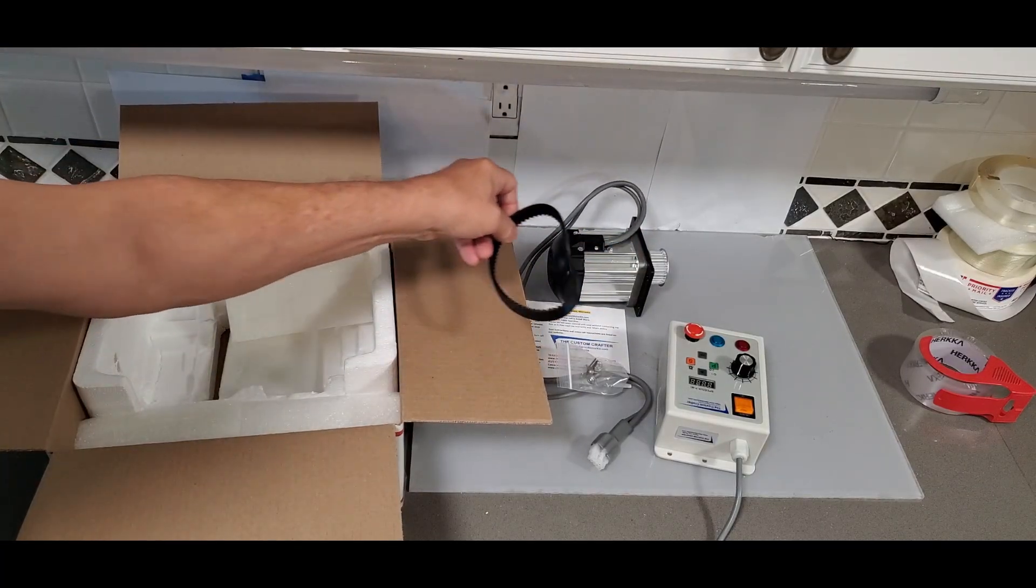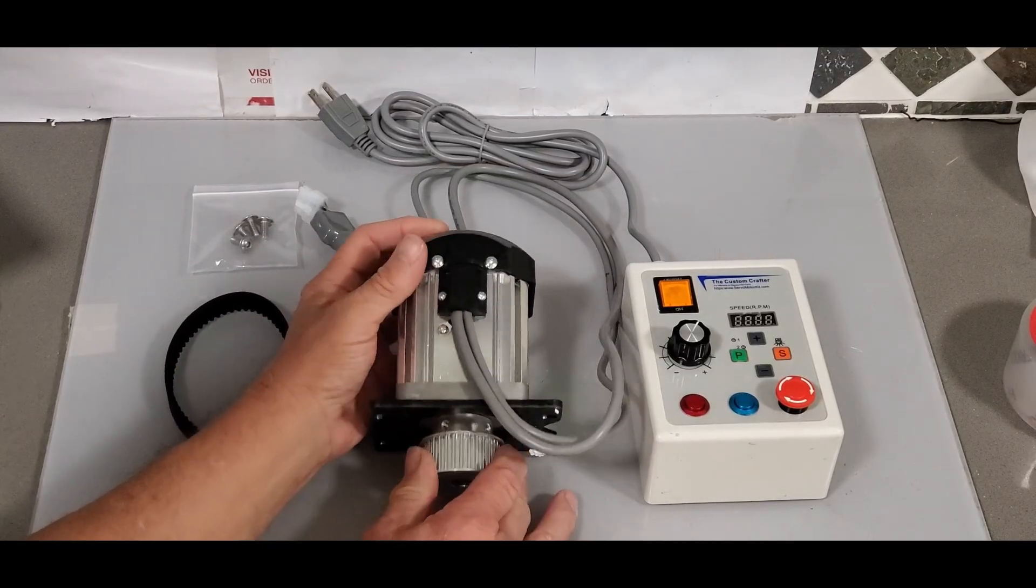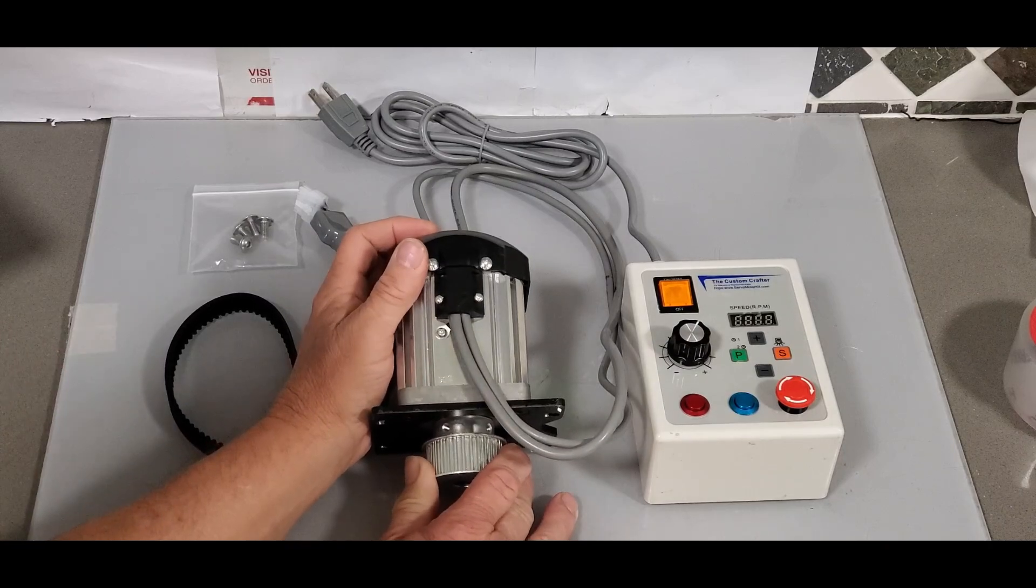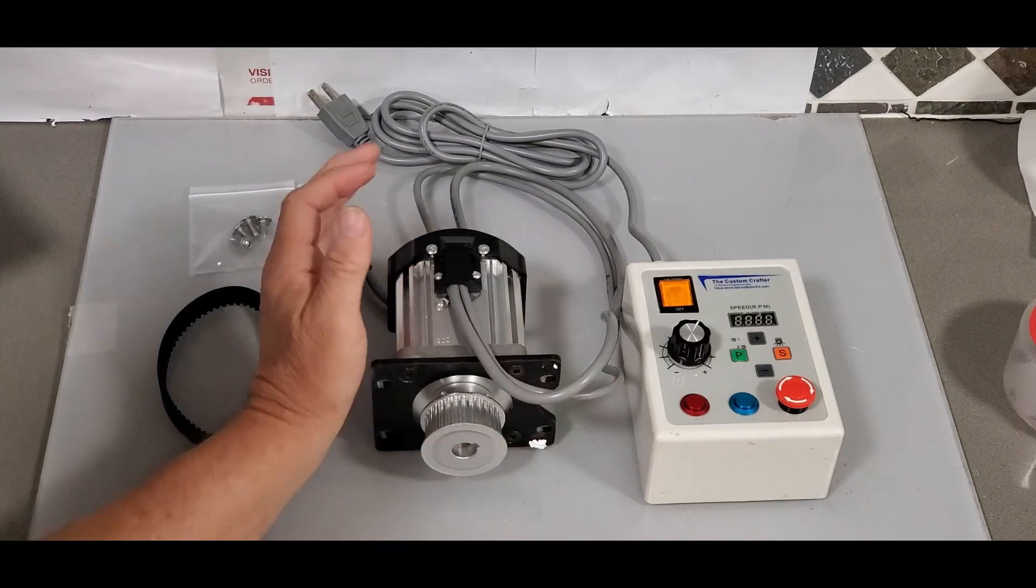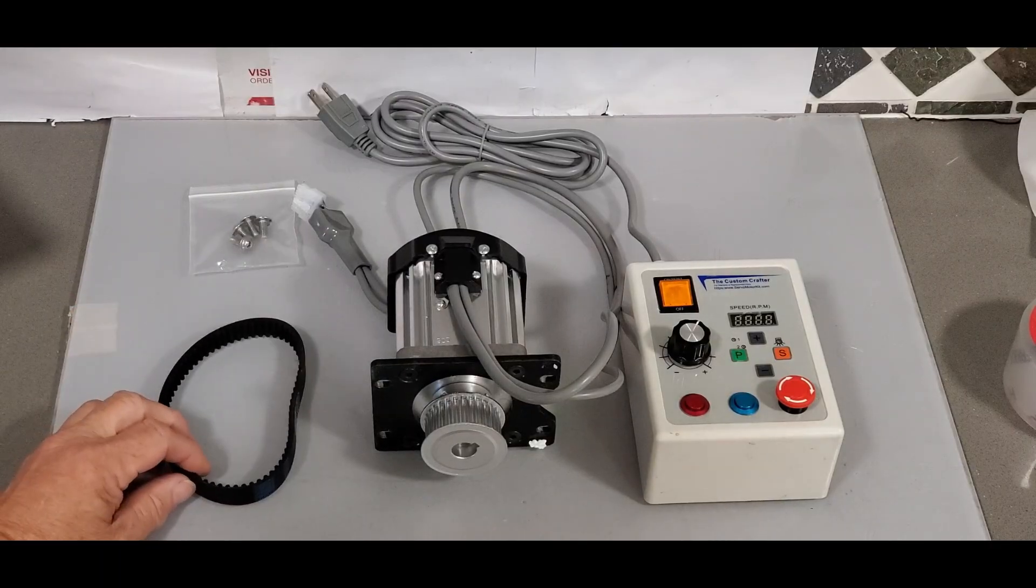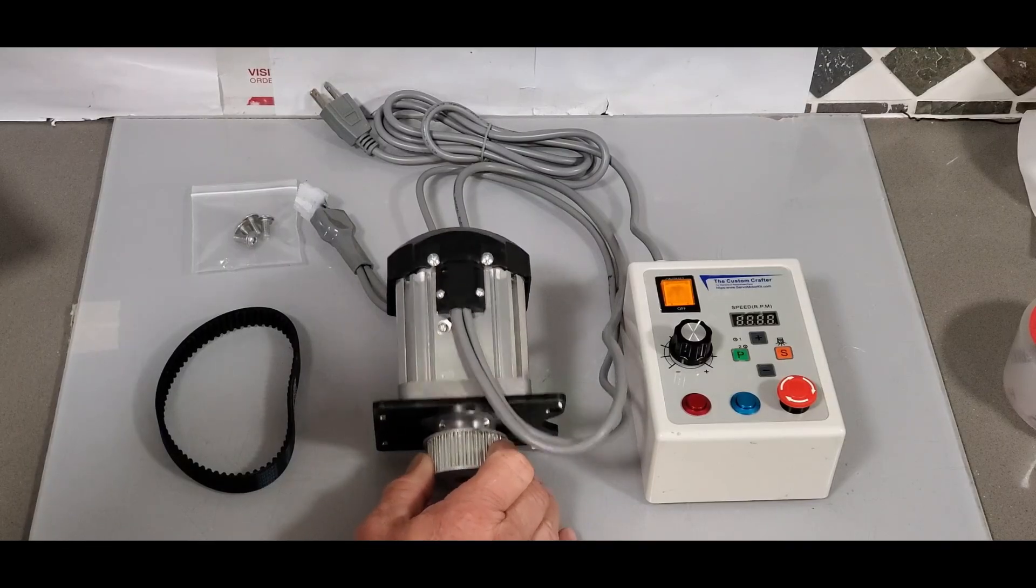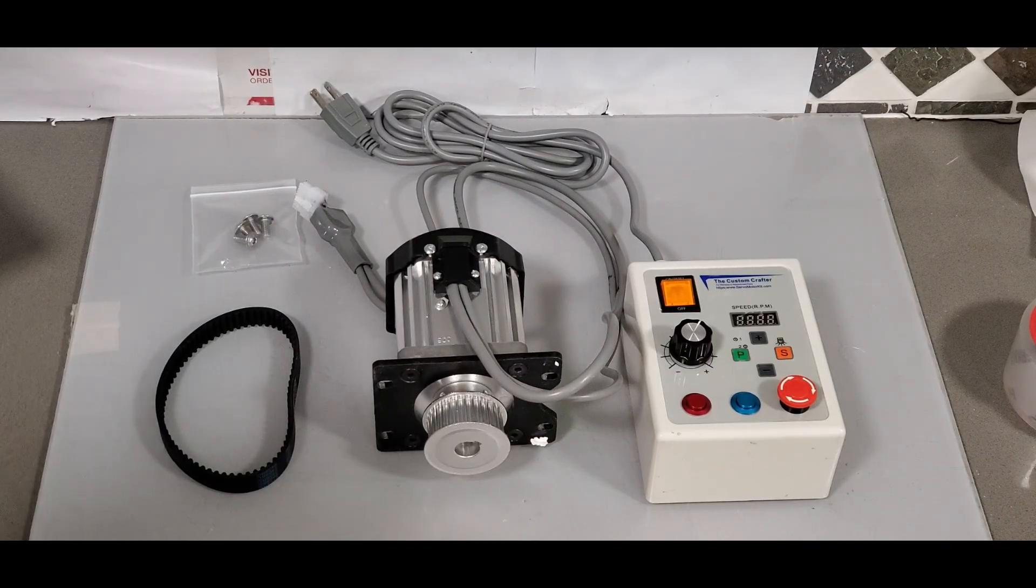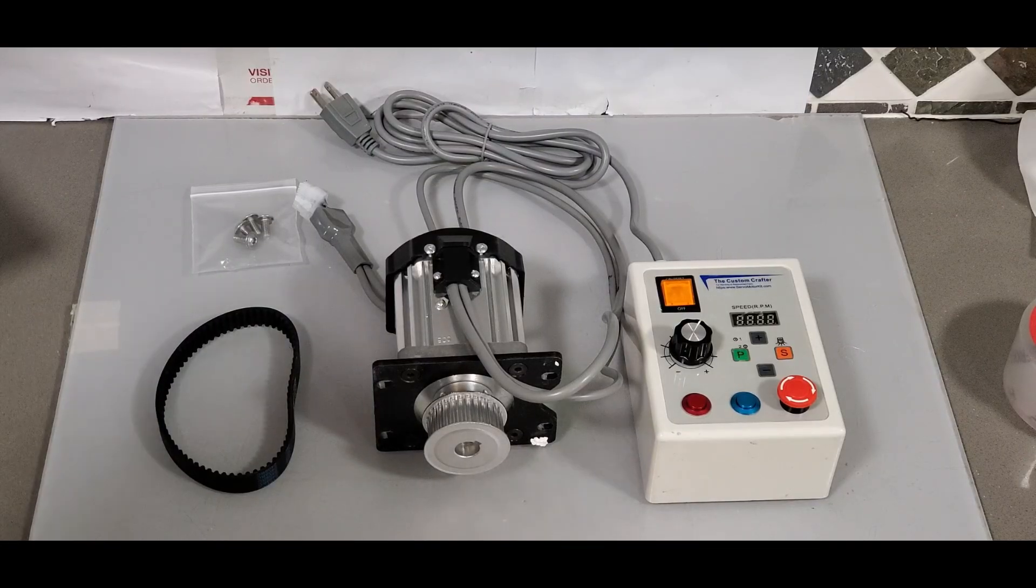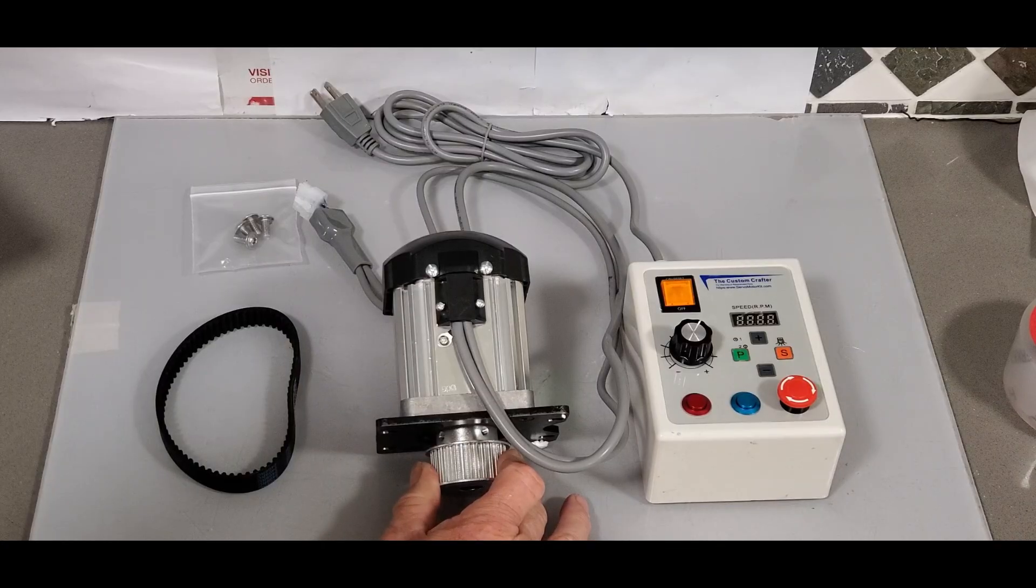This is the 900 watt servo motor kit to upgrade your little machine shop so-called high torque mini mill. The motor that the high torque mini mill comes with produces about three and a half Newton meters of torque. It's really not a high torque motor. This is going to produce 11 Newton meters of torque, probably four times the amount of power that the original mill was sold with.